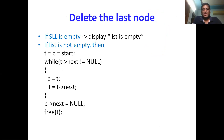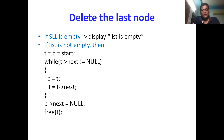One important thing not written here: you also need to handle the single element condition. If start->next equals null it means there is only one element. In that case, take a temporary variable t = start, set start = null, and then free(t). This makes the linked list empty after deleting the only node.